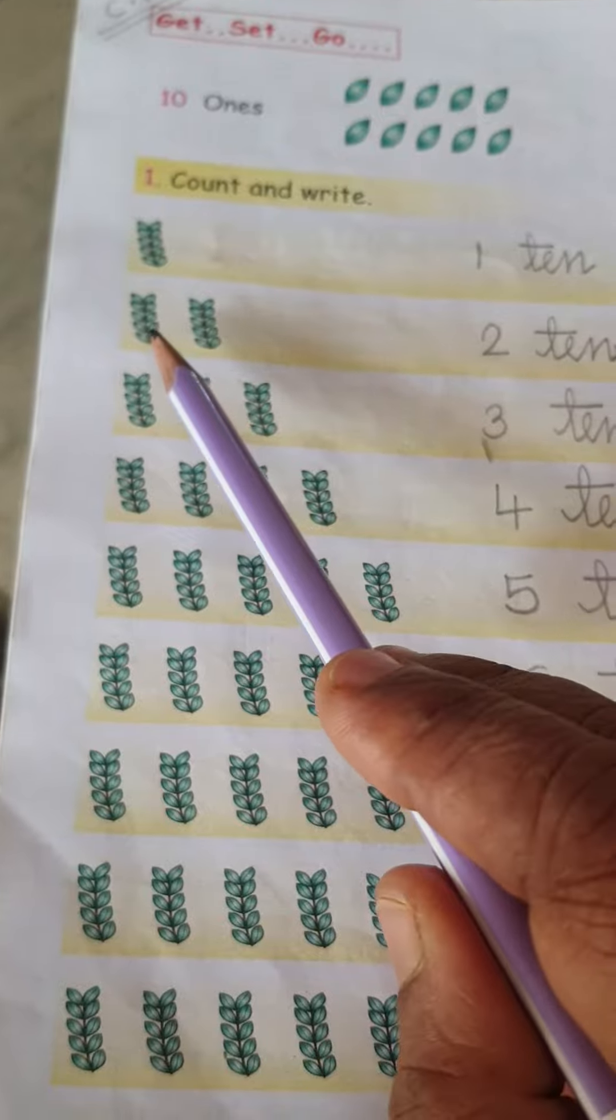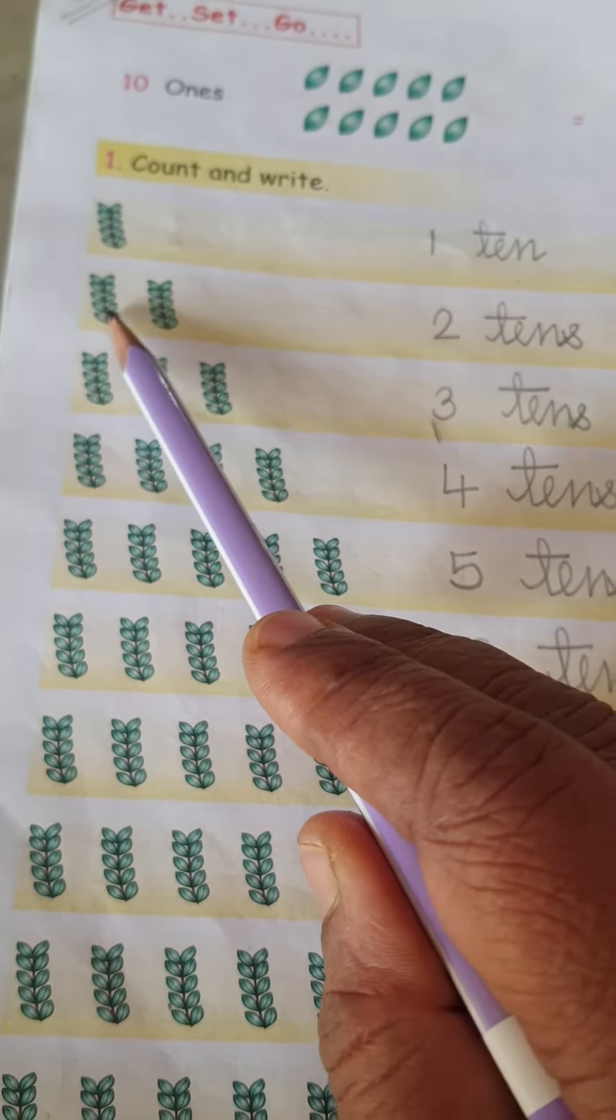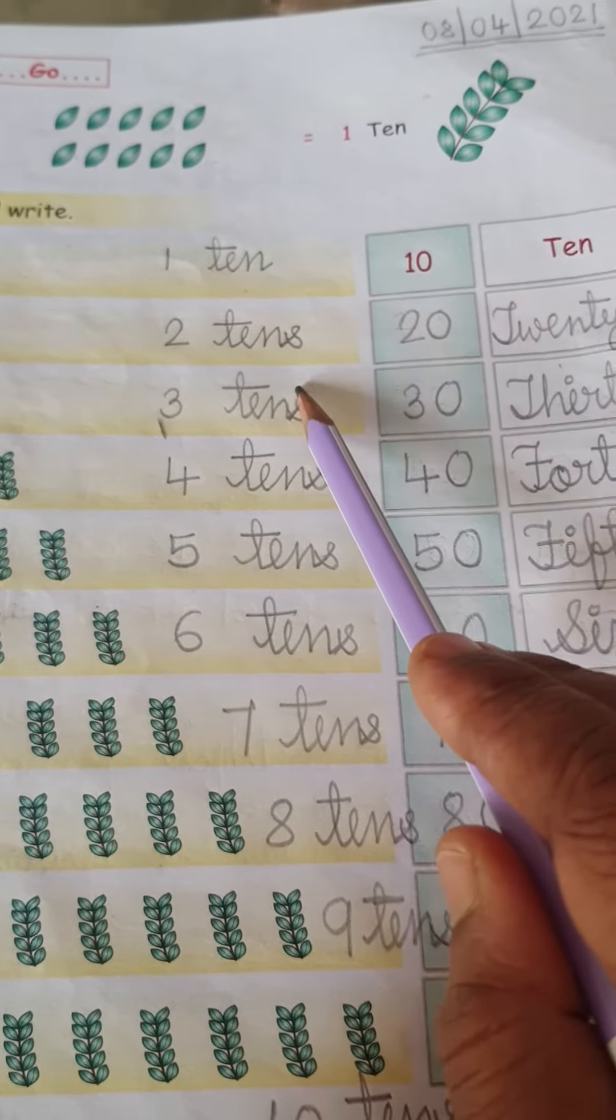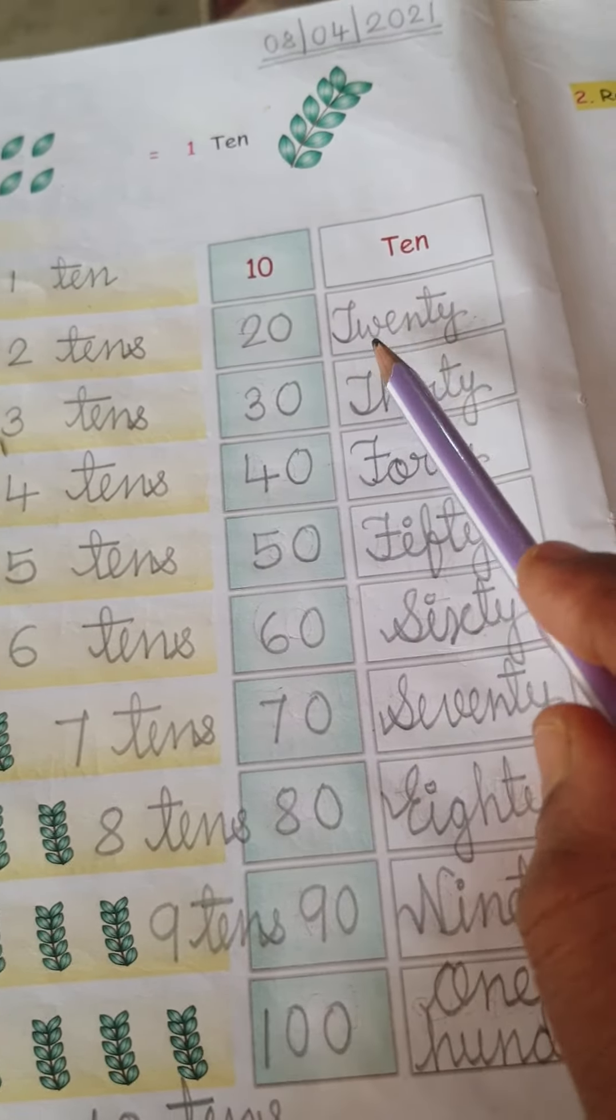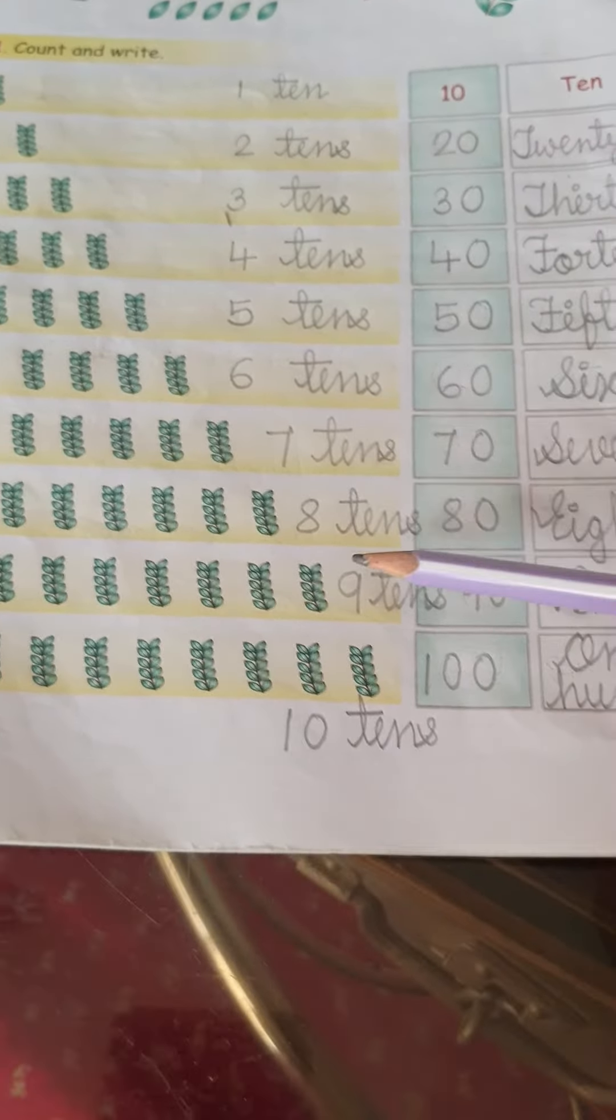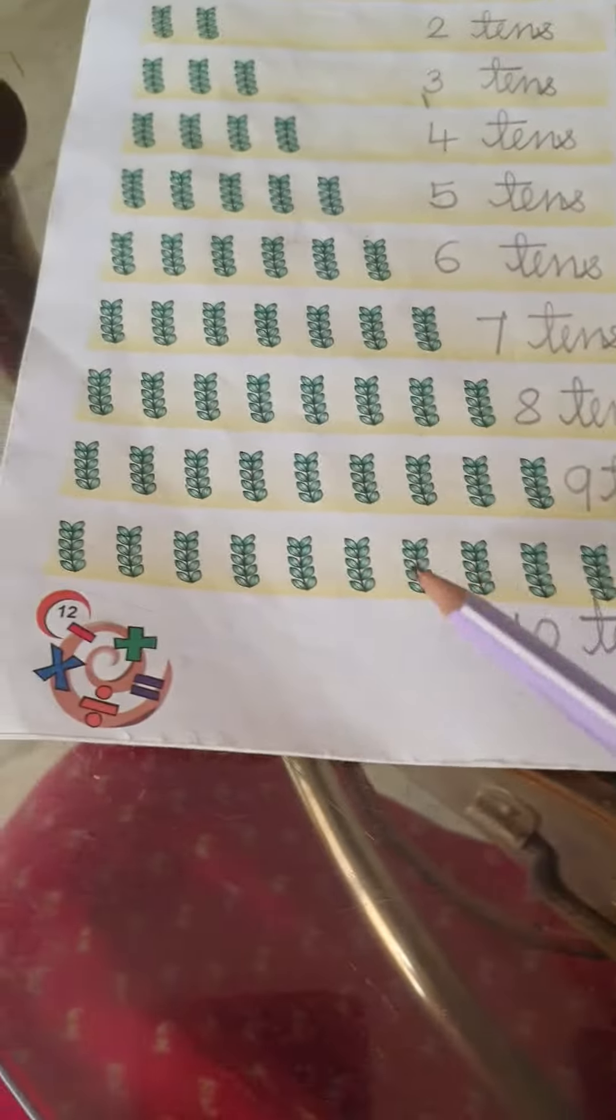Here 2 tens. Means together this is 10, this is 10. 2 tens. 2 tens means 20. Right here 20 spelling. Like this 1 ten, like this another 1 ten.